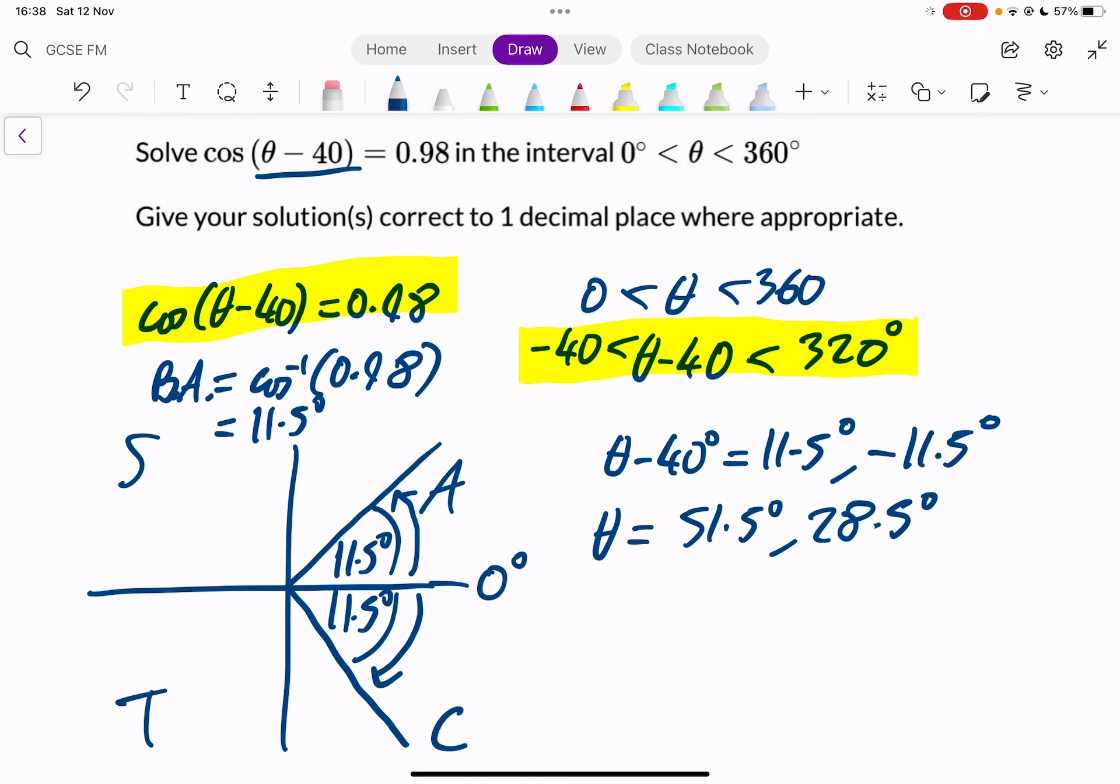Okay, we're going to just check one of these. I'm going to check this one just to show you that it works. So I'm going to put this back into the original equation. Now, you don't have to do this in an exam, certainly don't write it down. But that is cos of 28.5 minus 40.